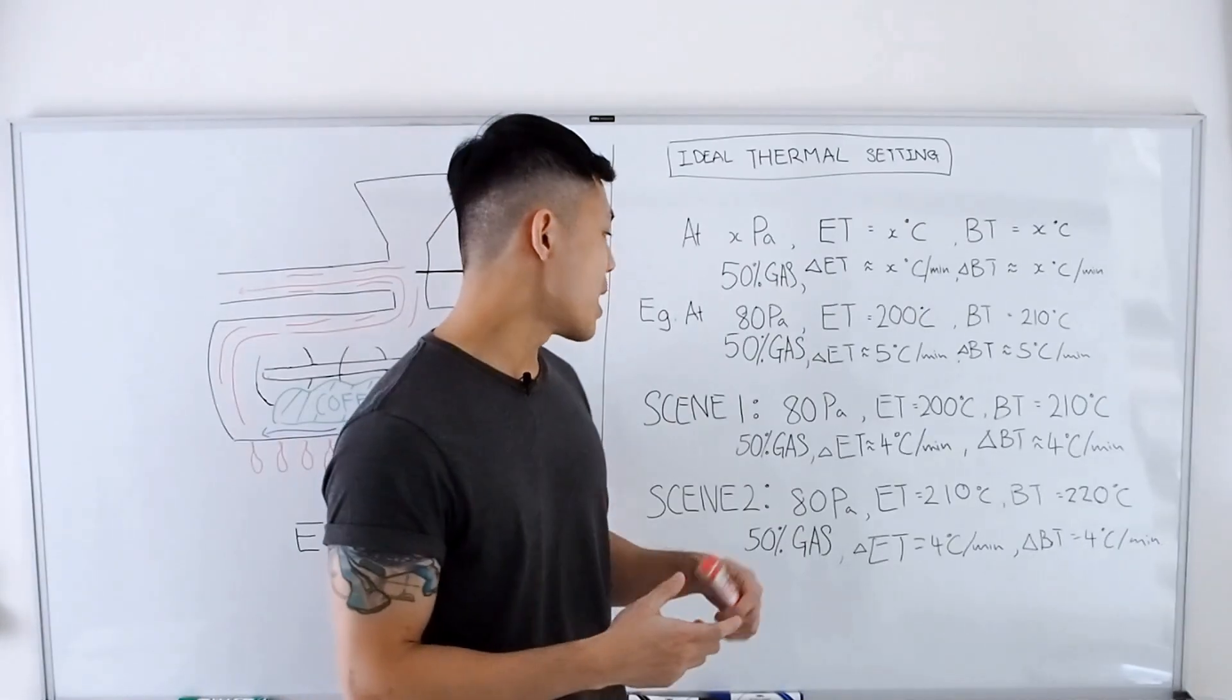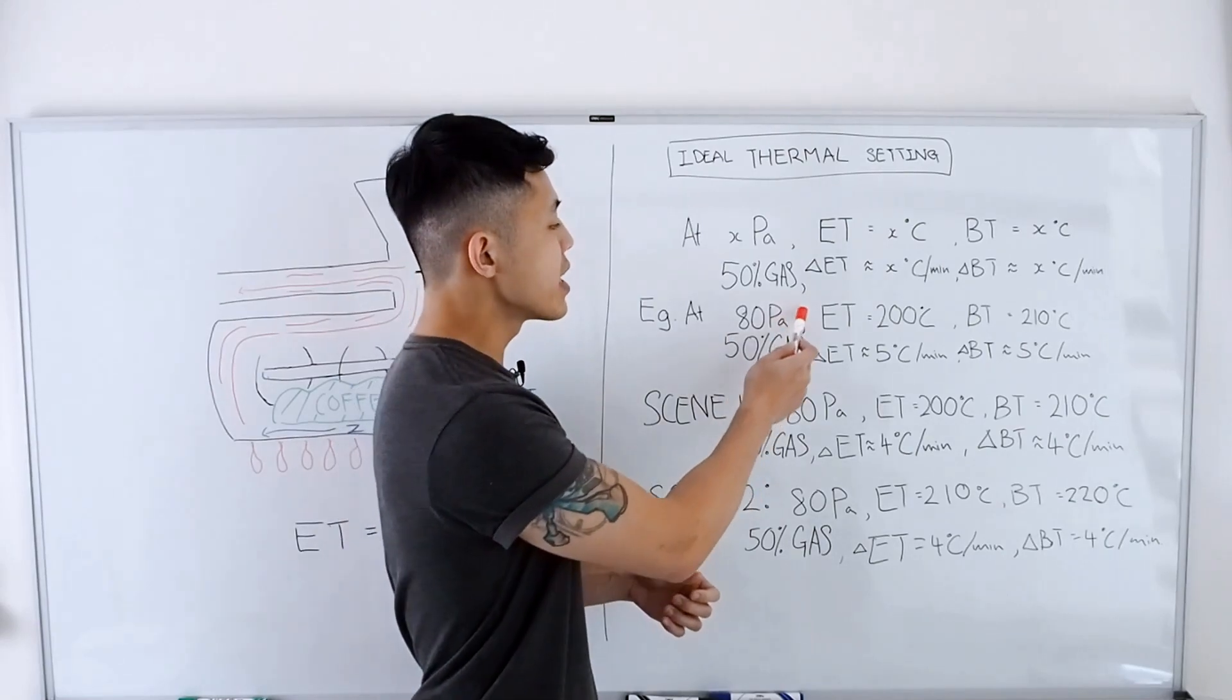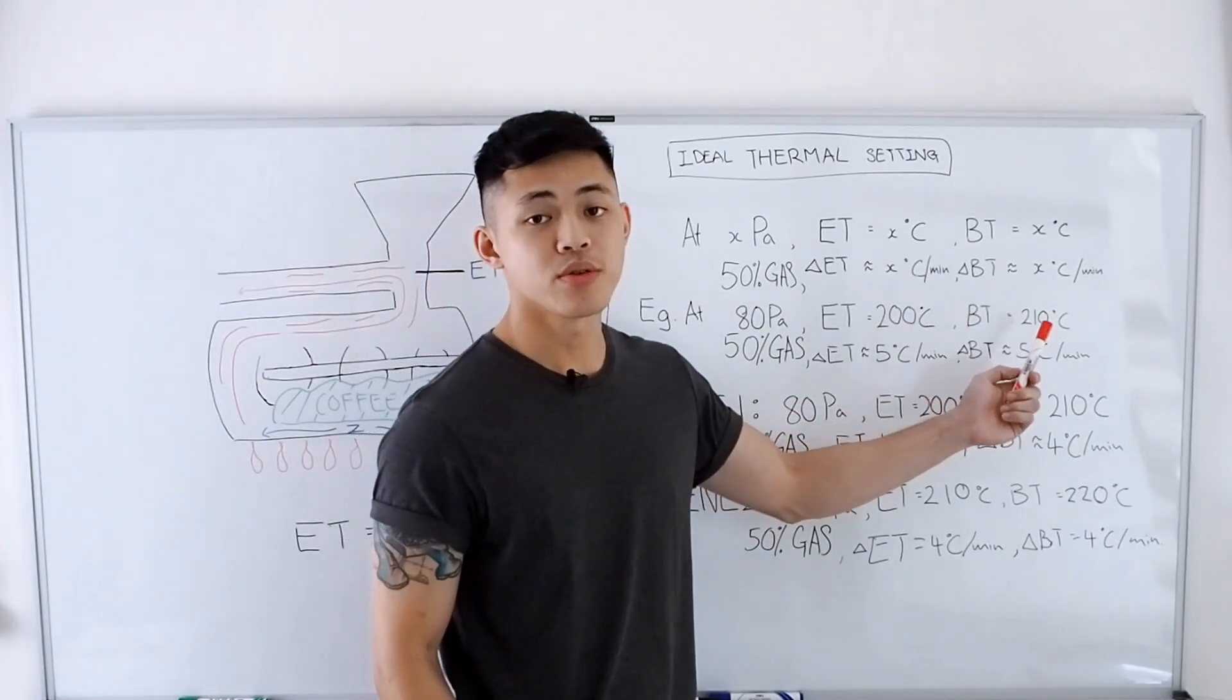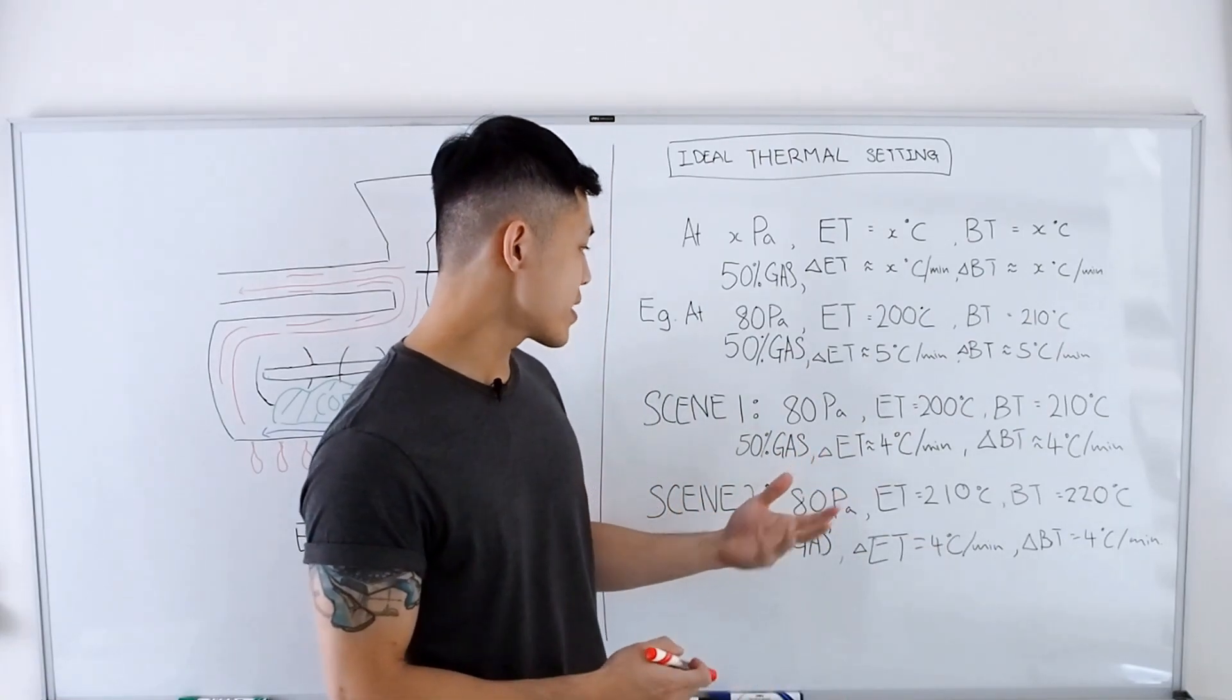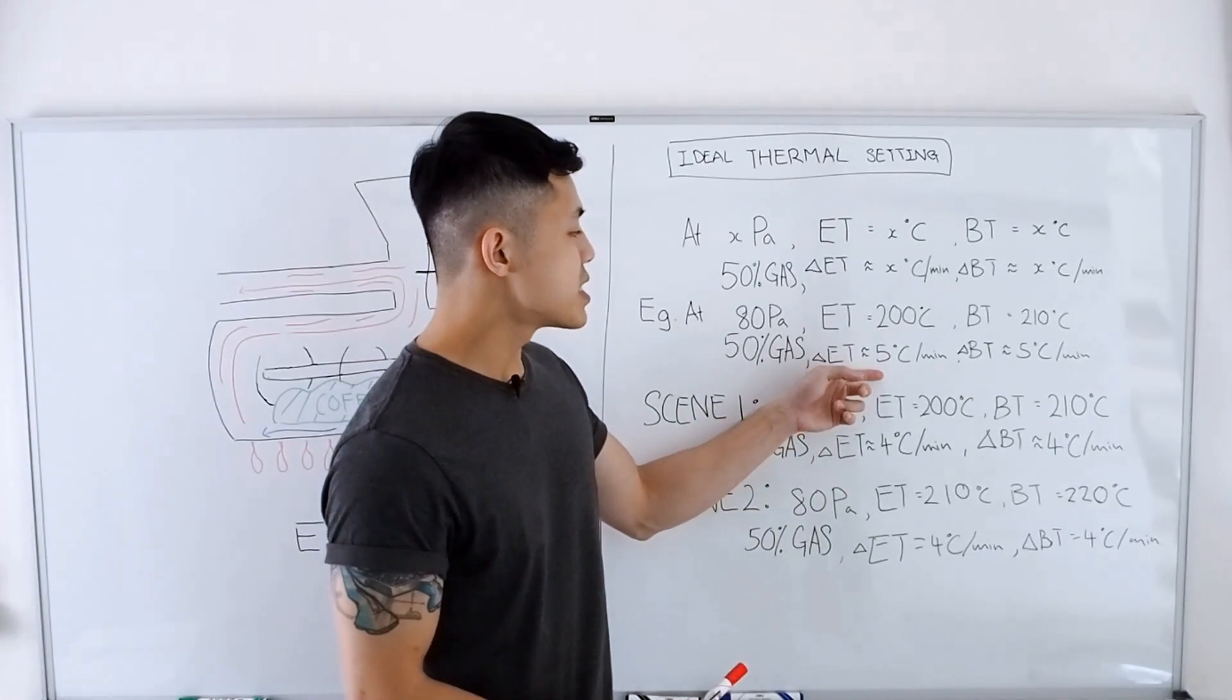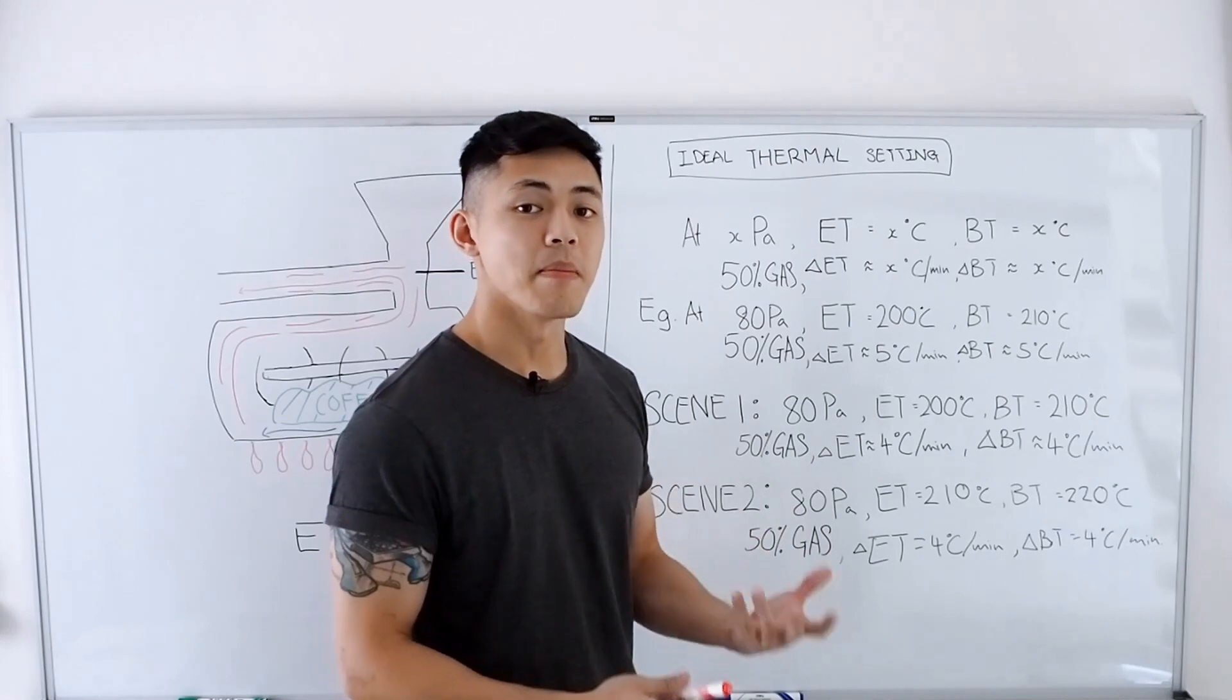So for today's video we'll use a hypothetical example. We're going to set the ideal thermal setting at 80 pascals, where the ET and BT is 200 and 210 degrees Celsius respectively. The gas setting is set at 50 percent and the delta ET and delta BT is set at 5 degrees Celsius per minute.